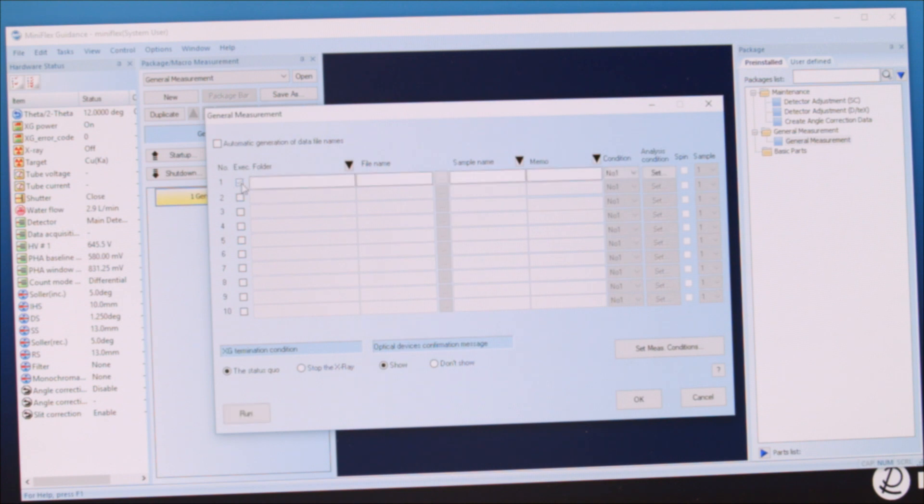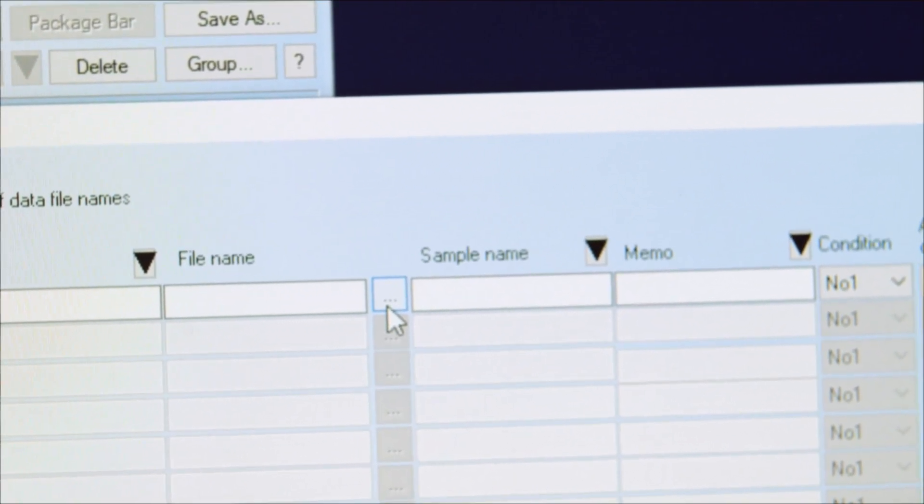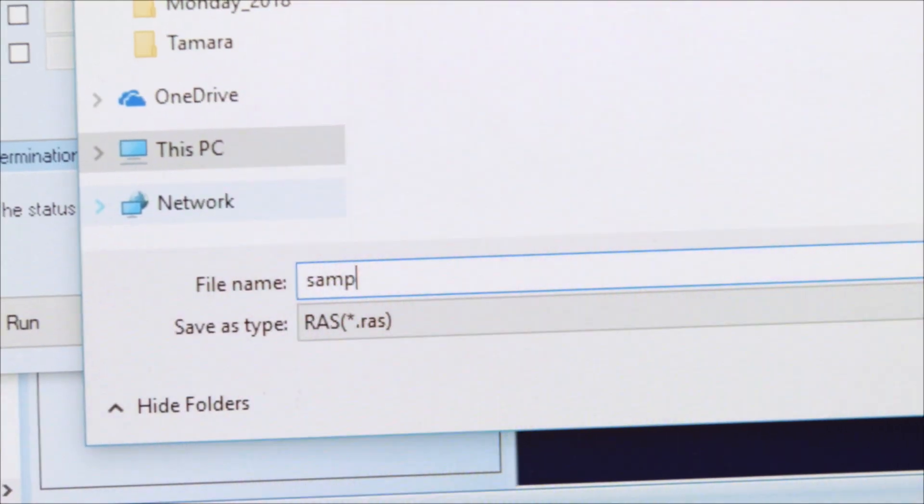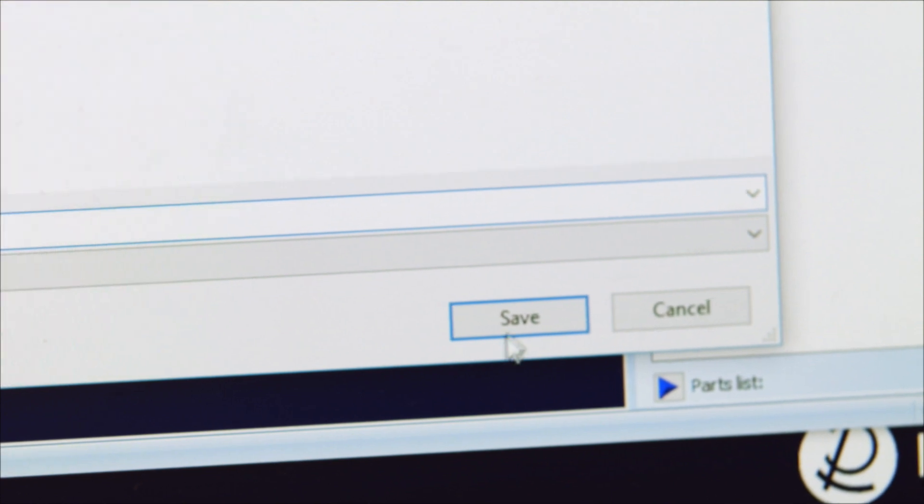Click the box next to one as we're only doing a single scan. Click the File button. Navigate to your lab's folder in Scan Data. Give a name to your data and click Save.